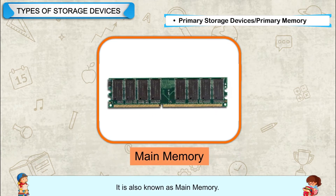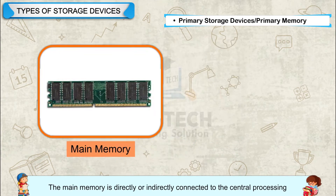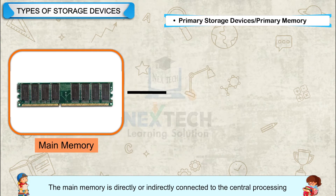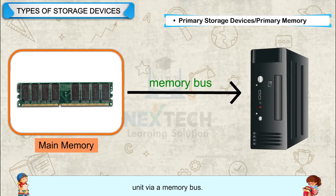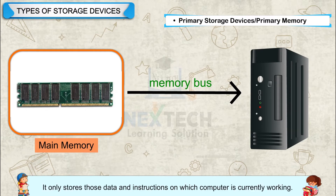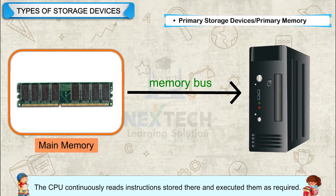Primary Memory is also known as Main Memory. The main memory is directly or indirectly connected to the central processing unit via a memory bus. It only stores those data and instructions on which the computer is currently working.